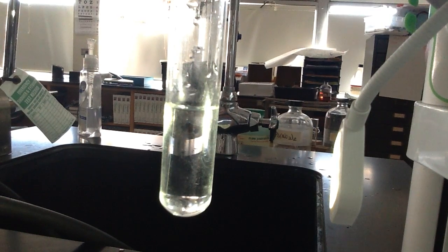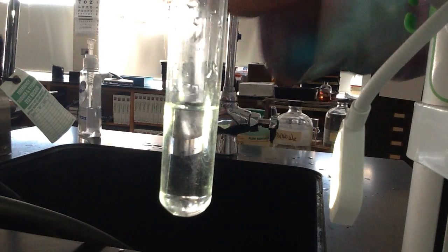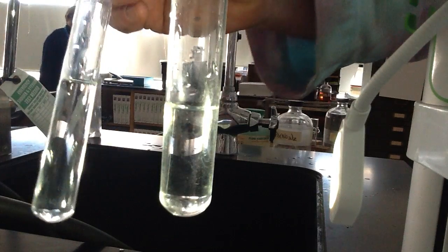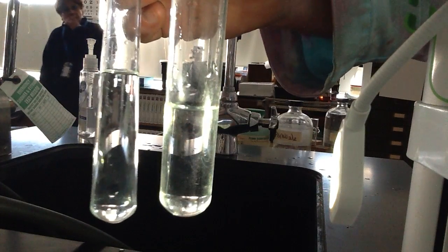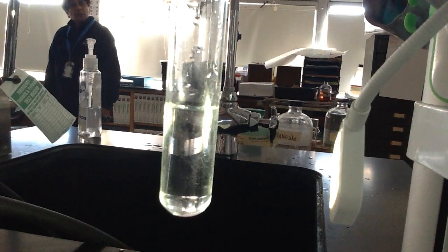So in the test tube is lead 2 nitrate, it's a clear colorless solution, and in this test tube right here is potassium iodide, which is also a clear colorless solution.